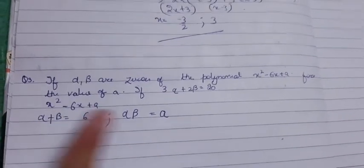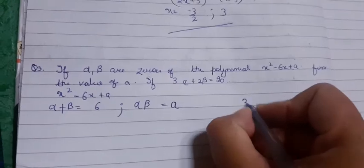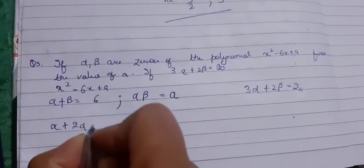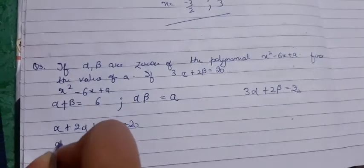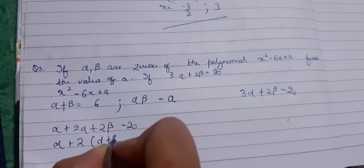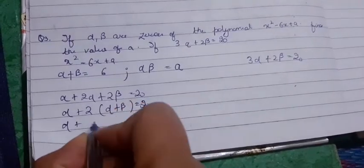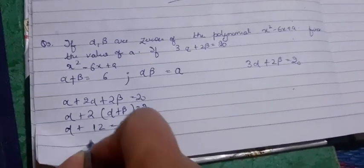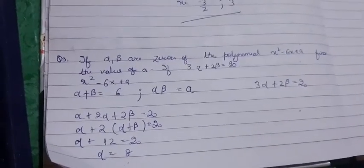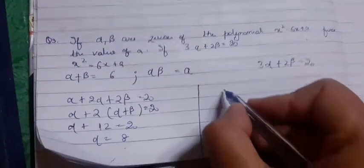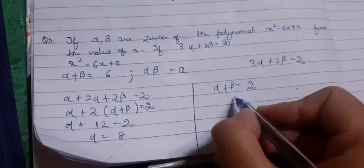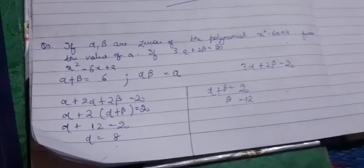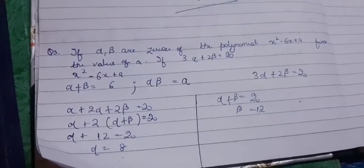Given 3α + 2β = 20. We can write this as α + 2(α + β) = 20. Since α + β = 6, we have α + 2(6) = 20, so α + 12 = 20, giving α = 8.